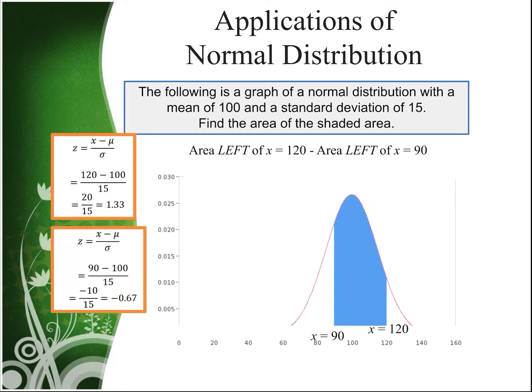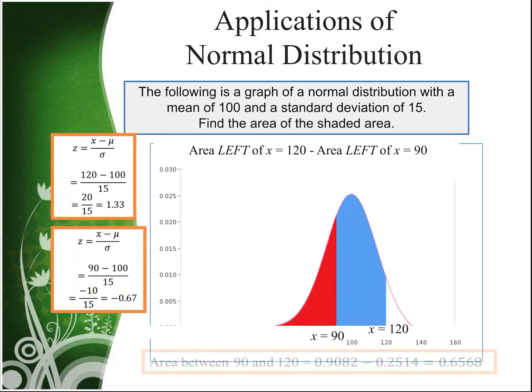So we need to subtract the areas to the left of 120 and to the left of 90. And if we look at our table here, we're going to have the z-score of 1.33 gives an area of .9082, and a z-score of negative .67 gives an area of .2514. And when we subtract those, the area in between is .6568.